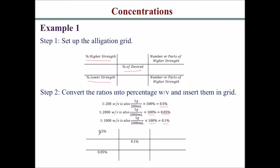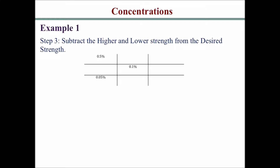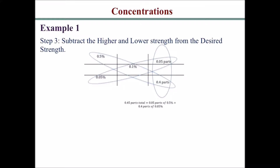You have 0.5% (the higher strength) on the top left, 0.05% (the lower strength) on the bottom left, and 0.1% (the desired) in the middle. Then you subtract the higher and lower strengths from the desired strength: 0.5% minus 0.1% equals 0.4 parts; then 0.05 minus 0.1 gives an absolute value of 0.05 parts. Remember, there are no negatives.